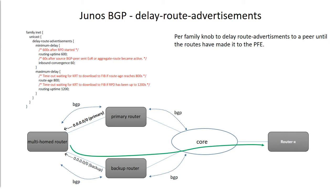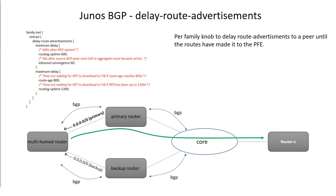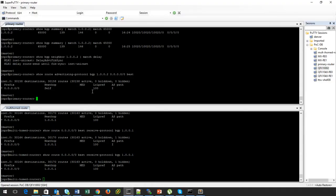Basically, what this command does is help alleviate gracefully moving traffic from the backup router onto the primary router. This will happen sometime after BGP sessions get established on the primary router. The idea is not to advertise all routes immediately after BGP comes up, but to wait — to give the router time to program its PFE — and then start advertising routes and attracting traffic once it is ready.